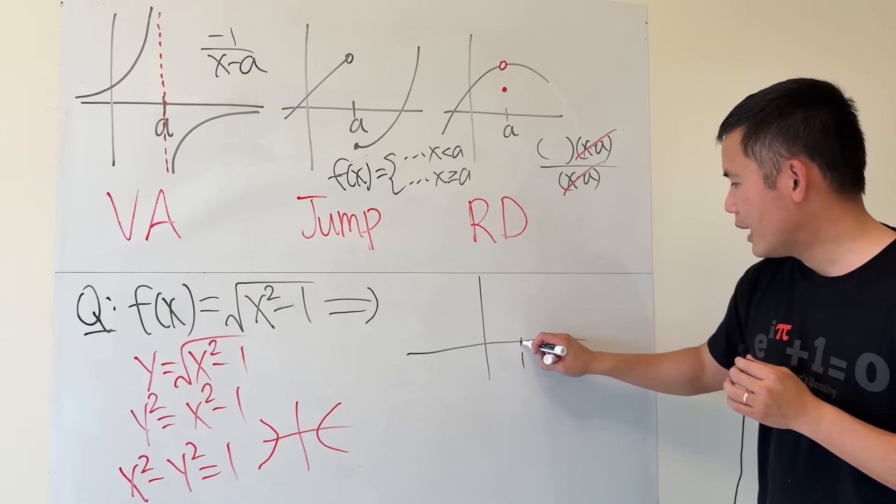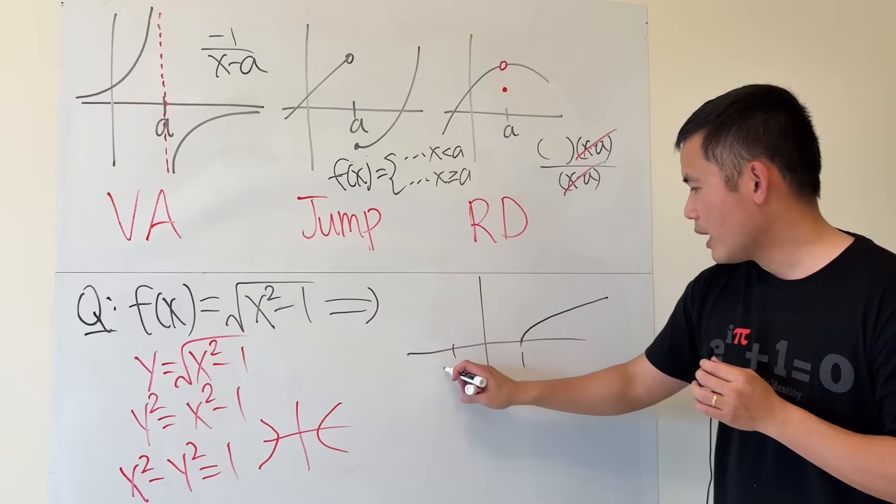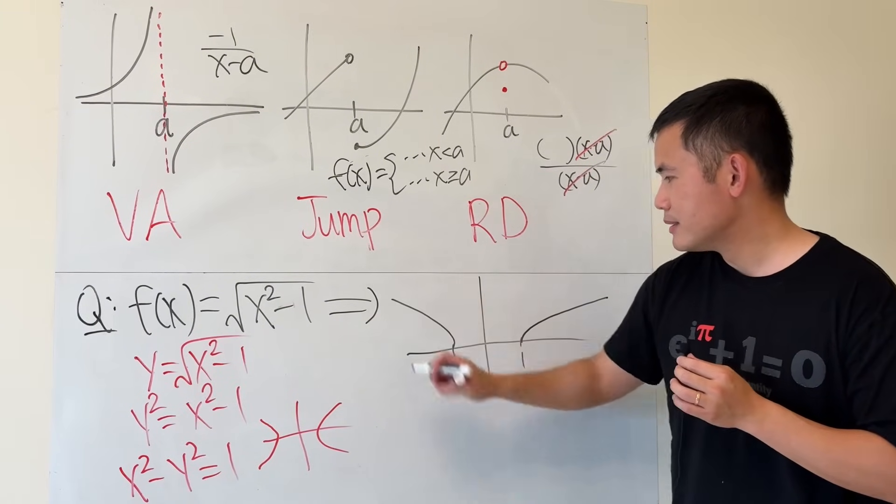At 1, you have something like this. At negative 1, you have something like this. Something like that.